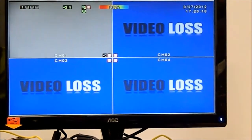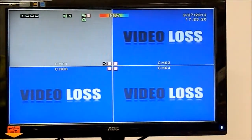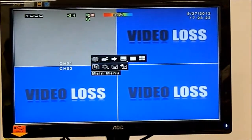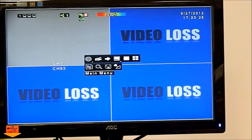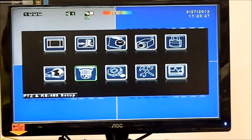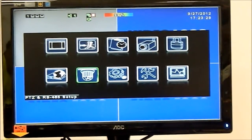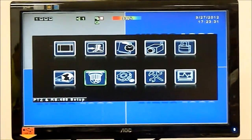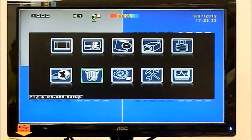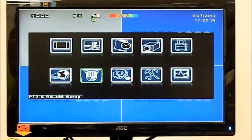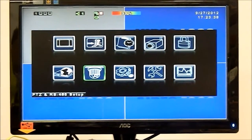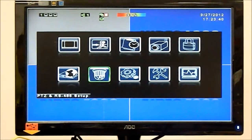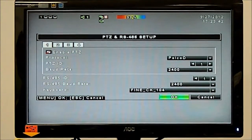Two things we should program: one is protocol, then the baud rate. So I go to the menu, then to the main menu. You might come across different types of DVRs and different types of menus, but go to PTZ setup. I'm on PTZ setup. It says PTZ and RS-485 setup. I click on that, and once I click on it,